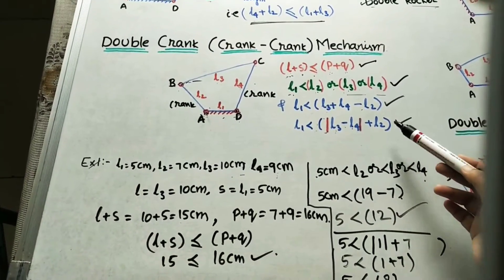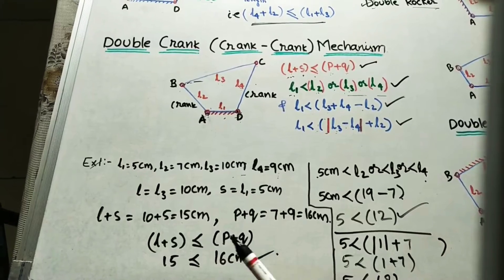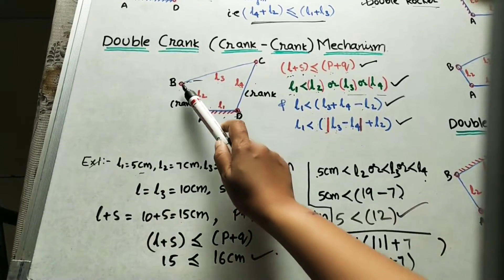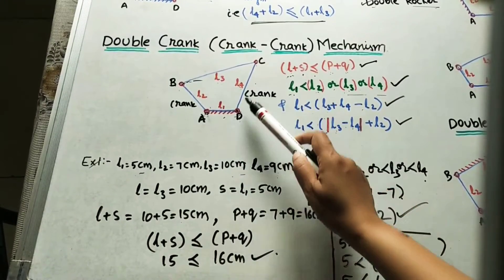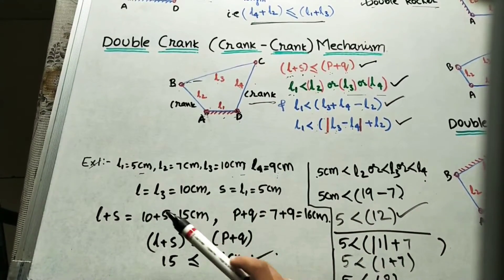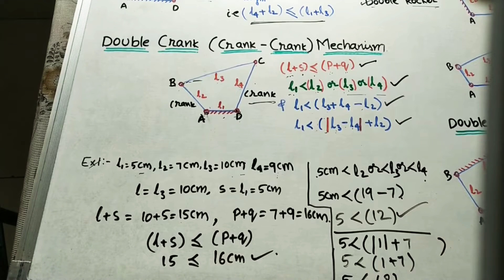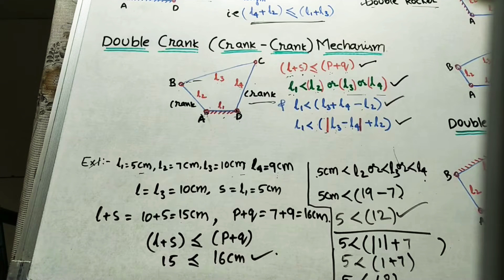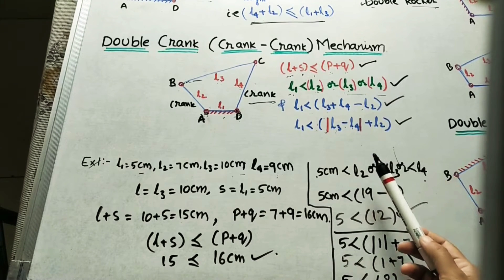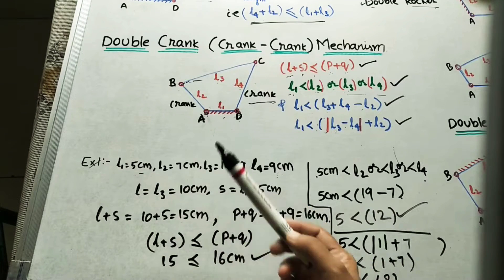Since all conditions are satisfied, this mechanism is a double crank mechanism. Always remember: in a double crank mechanism, we fix the shortest length link (here 5 cm). The AB link makes complete rotation about fixed point A, acting as a crank, and DC also makes complete rotation about fixed point D, also acting as a crank. That is why it is called a double crank mechanism. The shorter link is always the fixed one.